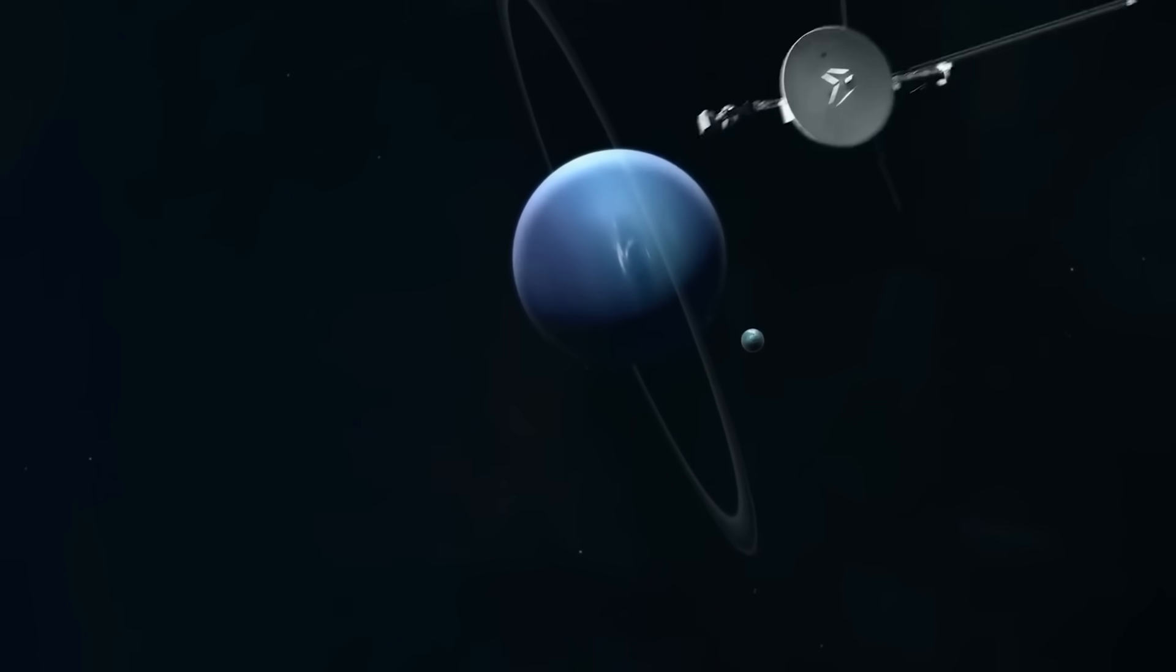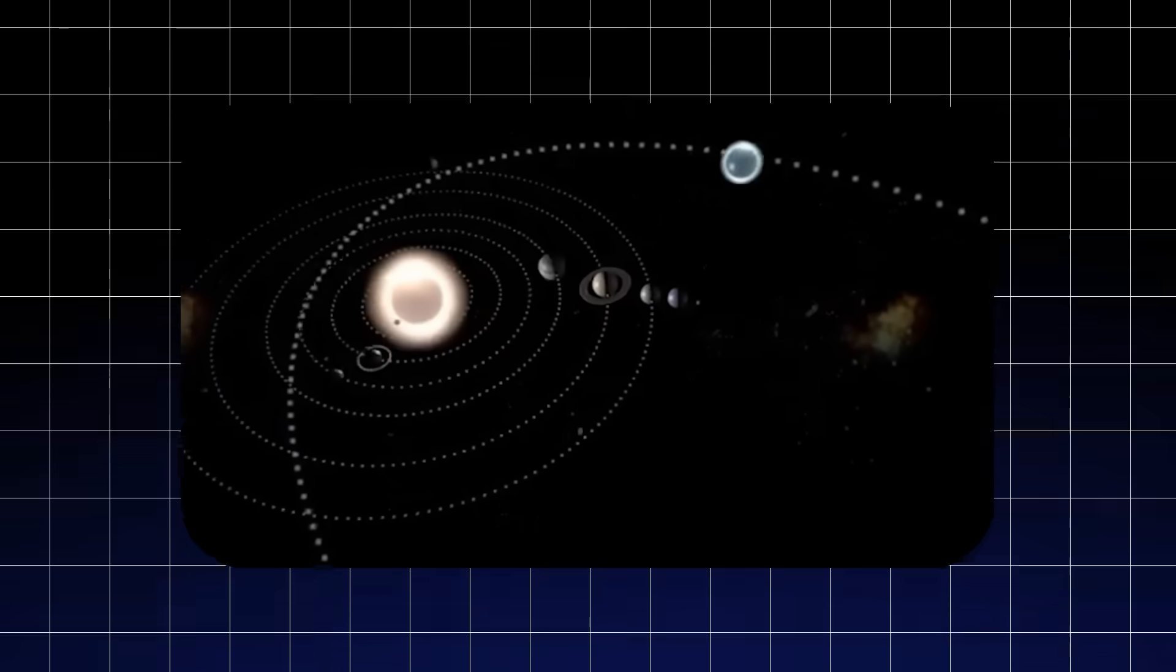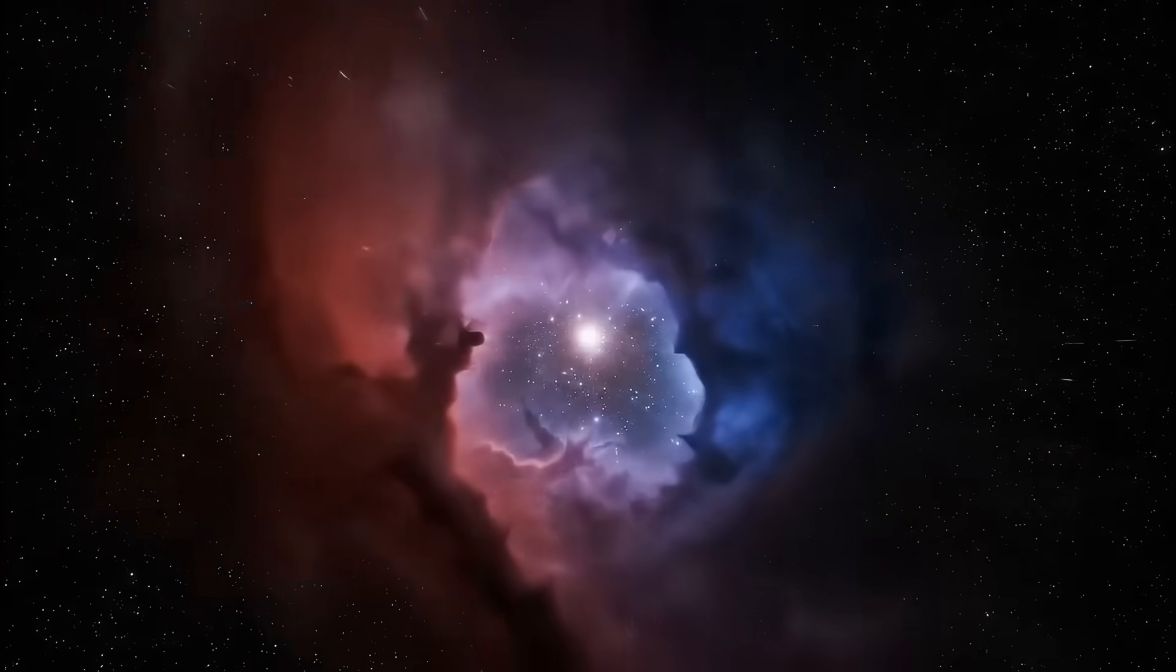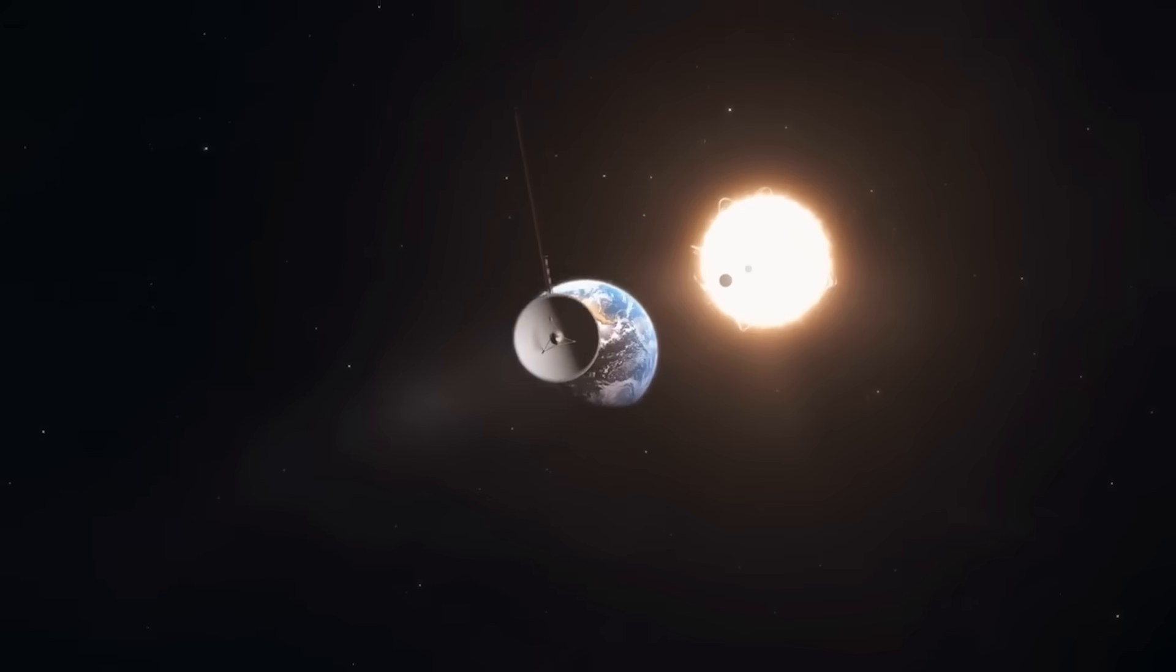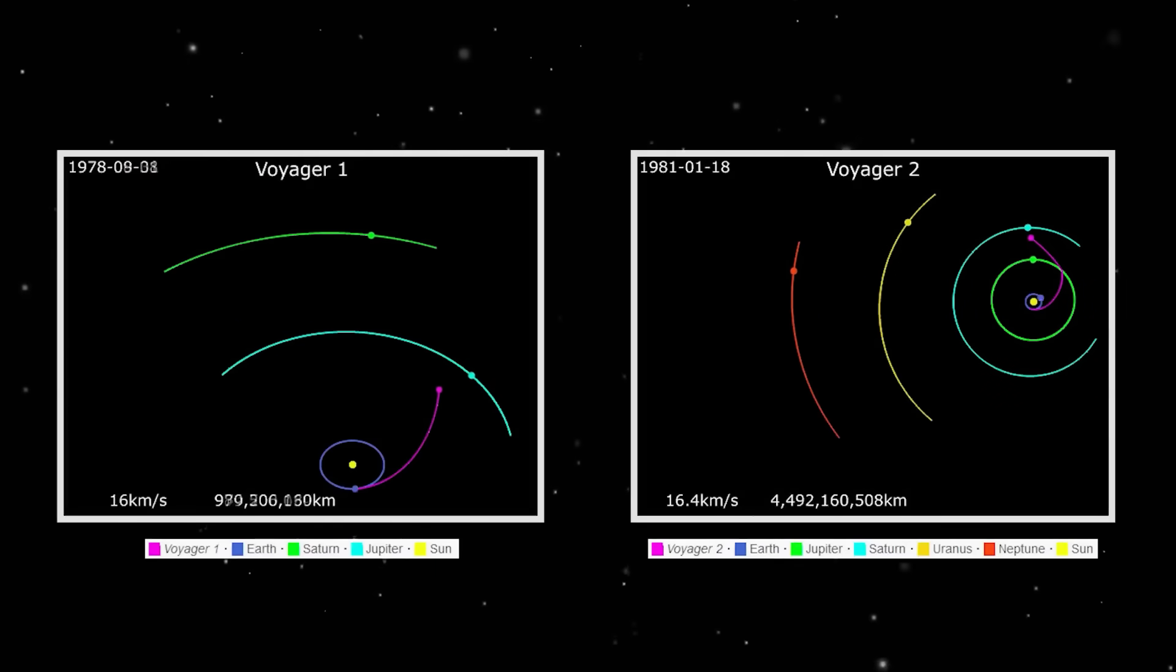The idea that Voyager 2 could have encountered an artifact or entity in deep space was once relegated to the realm of science fiction. But the parameters of the final signal seemed to contradict every expected outcome. There were no mechanical failures in the data logs leading up to the anomaly. The spacecraft's systems had been operating nominally, its trajectory stable, its instruments reporting the same empty stillness of interstellar space that it had been sailing through for years.